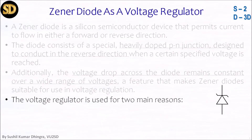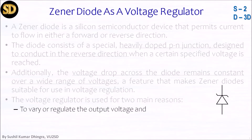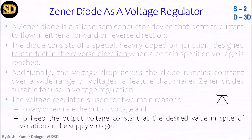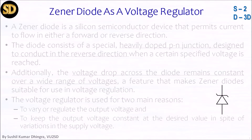The voltage regulator is used for two main reasons. First, to vary or regulate the output voltage, and second, to keep the output voltage constant at the desired value despite variations in the input supply voltage.